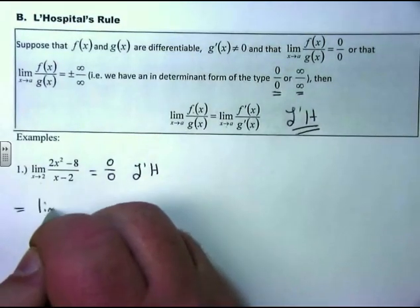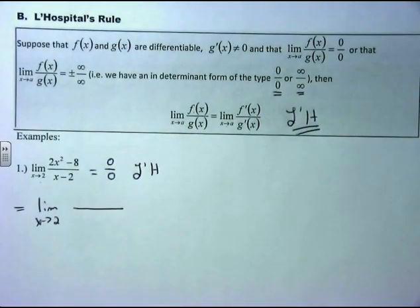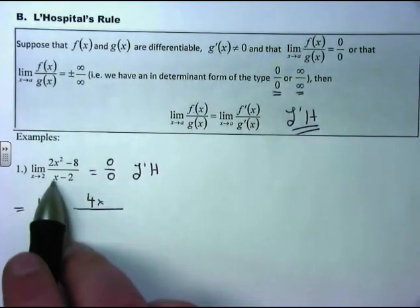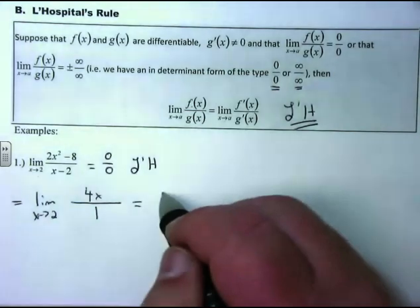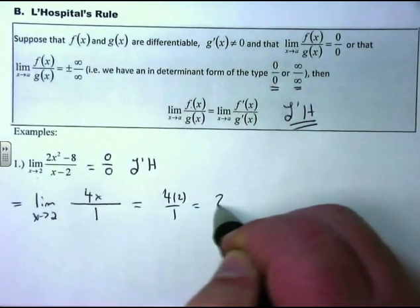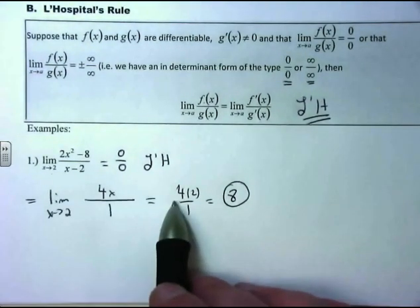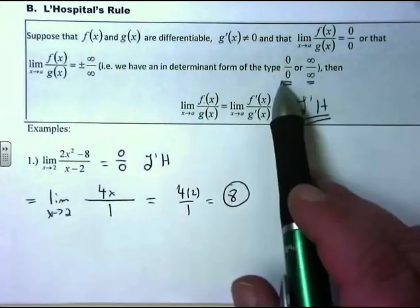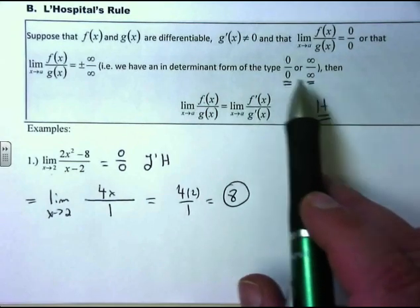Applying L'Hôpital's rule: take the limit as x approaches 2 of the derivative of the numerator over the derivative of the denominator. Derivative of 2x² − 8 is 4x; derivative of x − 2 is 1. Plugging in 2: 4(2)/1 = 8. The limit is 8. L'Hôpital's rule is a very quick way of evaluating limits with indeterminate forms of 0/0 or ∞/∞.